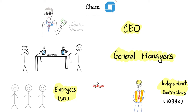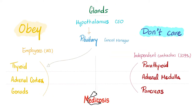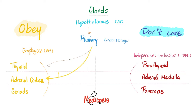We have a CEO and a general manager underneath, and then we have three employees and three independent contractors. Who's the CEO? The hypothalamus. Who's the manager? The pituitary. Who are the three employees? Thyroid, adrenal cortex, and gonads. Who are the independent contractors not influenced by the pituitary? The parathyroid gland, adrenal medulla, and pancreas.